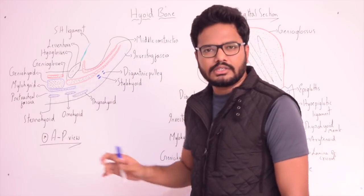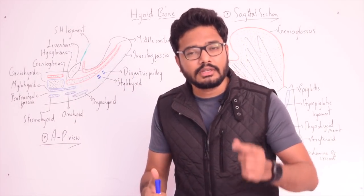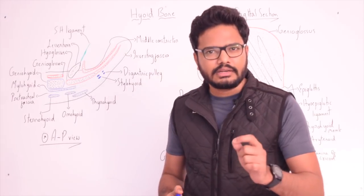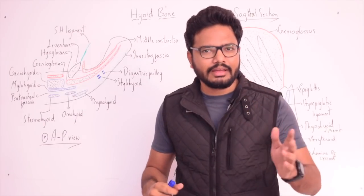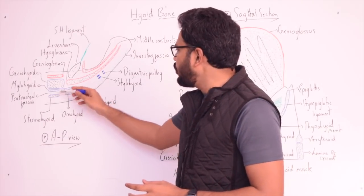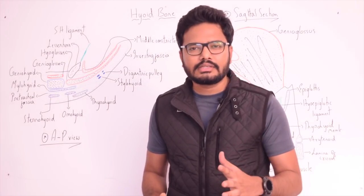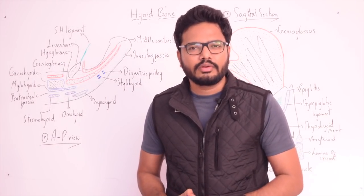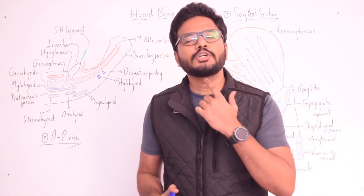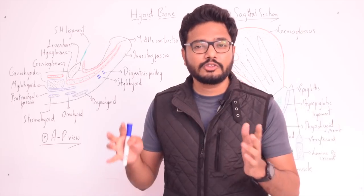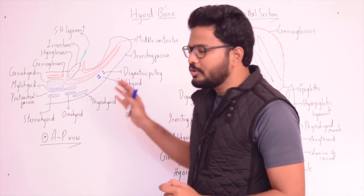Before going into the attachments, the developmental origin is very important: the upper part and lesser cornua develop from the second branchial arch, and the lower part and greater horn develop from the third branchial arch. The clinical relevance, as stated in the textbook, is that in suspected cases of murder, fracture of the hyoid bone indicates throttling or strangulation.